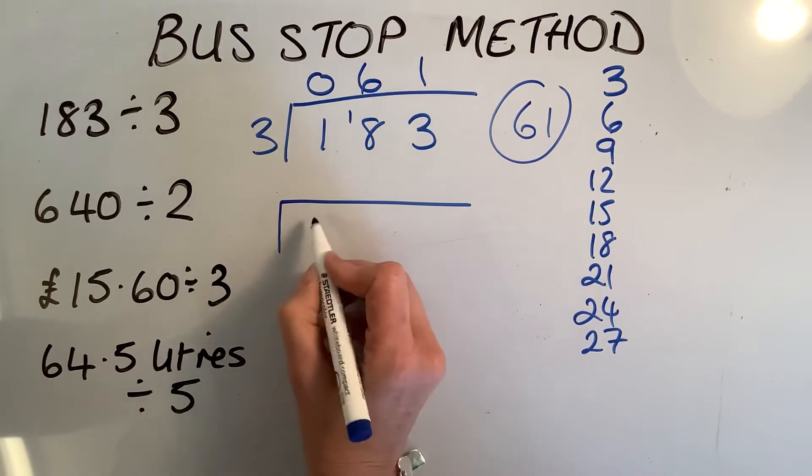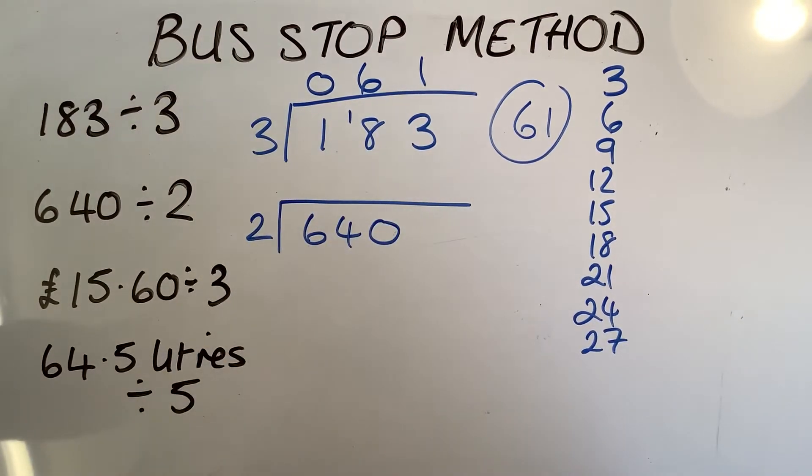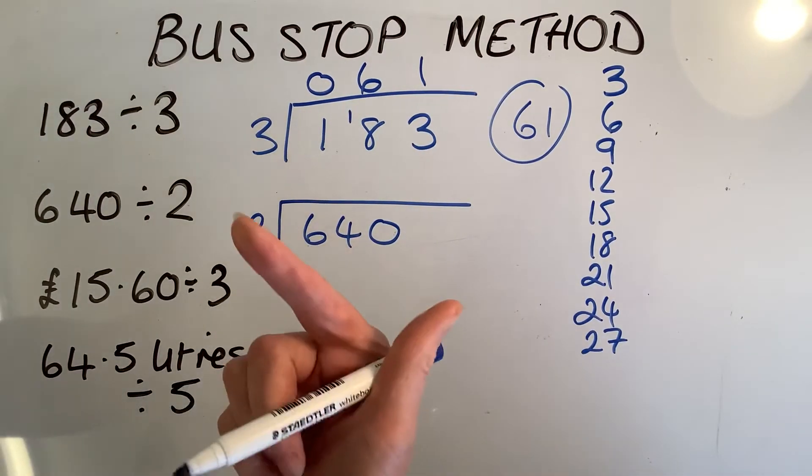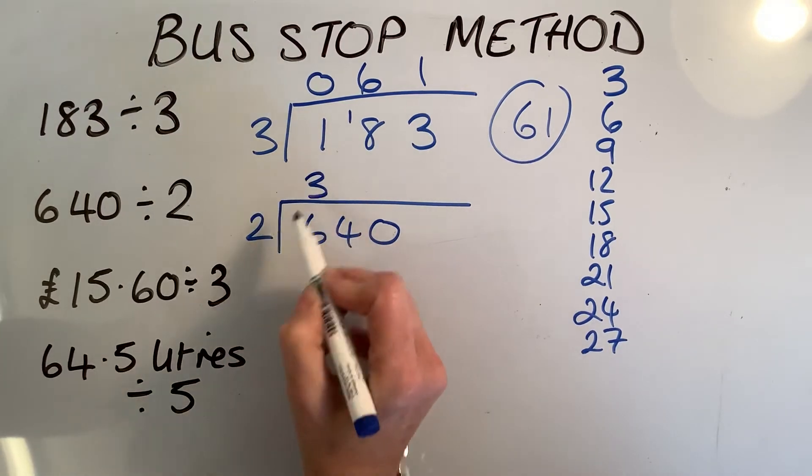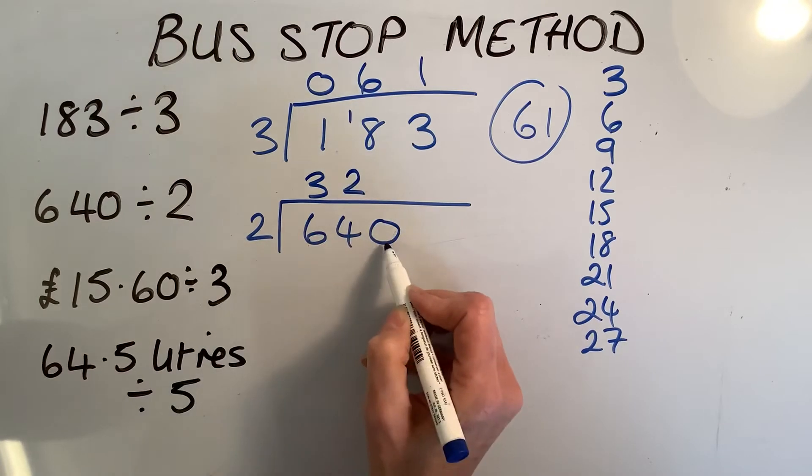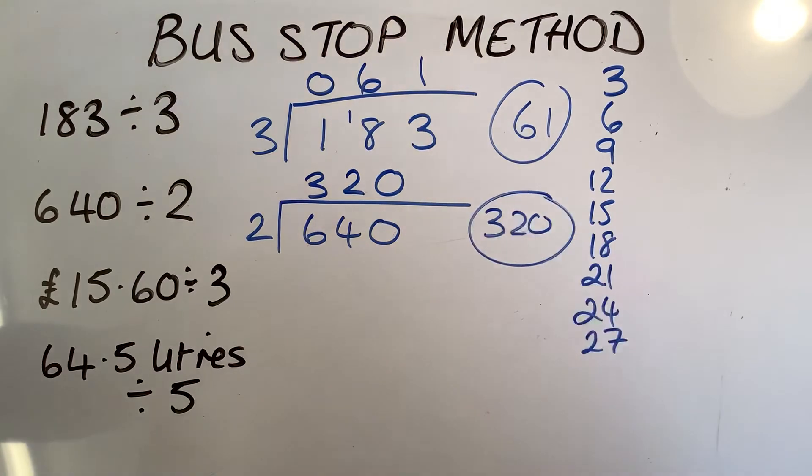Right, my next question. Draw my bus stop. I've got 640 divided by 2. Hopefully we all know our 2 times table, so we're not going to write it out. How many 2s are in 6? 2, 4, 6 - that's 3. How many 2s are in 4? 2. How many 2s are in 0? 0. So we've got an answer of 320 for that one. I've got no units, so I don't have to write any units in. Next question.